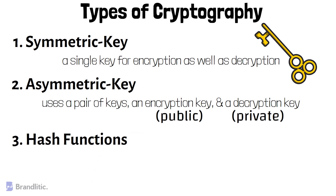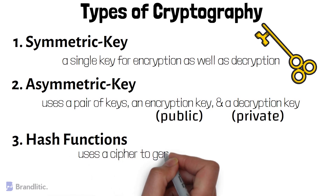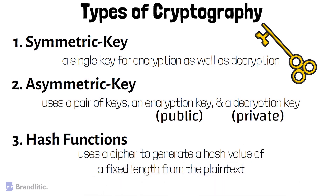Third, Hash Functions. This type of encryption does not make use of keys. Instead, it uses a cipher to generate a hash value of fixed length from the plain text. It is nearly impossible for the contents of plain text to be recovered from the cipher text without the key.